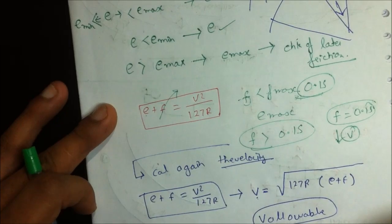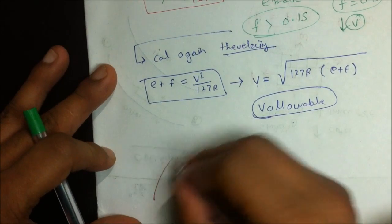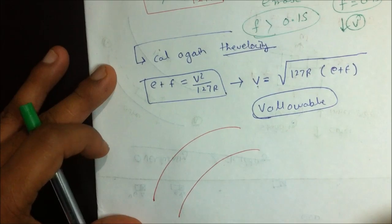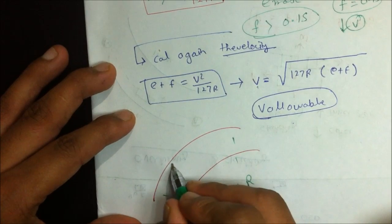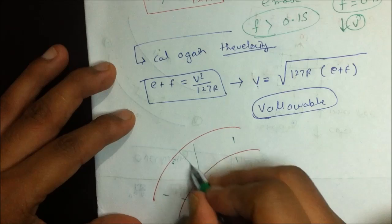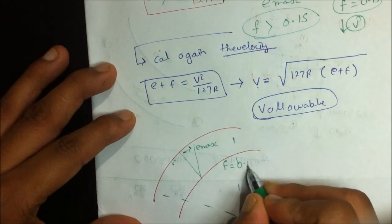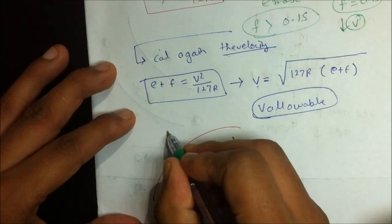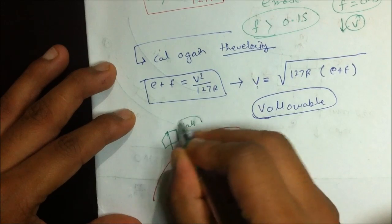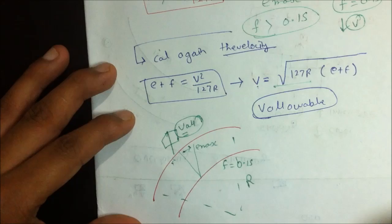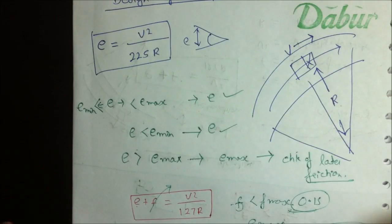This V_allowable is the speed permitted on the curve. The final curve design has: radius R, super elevation E_max, friction factor F equal to 0.15, and a speed sign board showing V_allowable, calculated as the square root of 127R times (E plus F). This completes the complete design of super elevation.